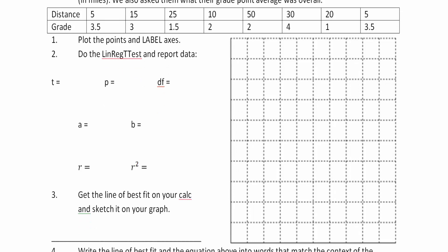Let's label our axes first and really dive into what we have. We've got a 10 by 10 grid here, and just like 99% of the time, your List 1 or X is going to be the first row of your table and your List 2 or Y is the second row. It looks like our distance goes from 5 to 50, so if we start at 0 and go by fives we'll make it there in time.